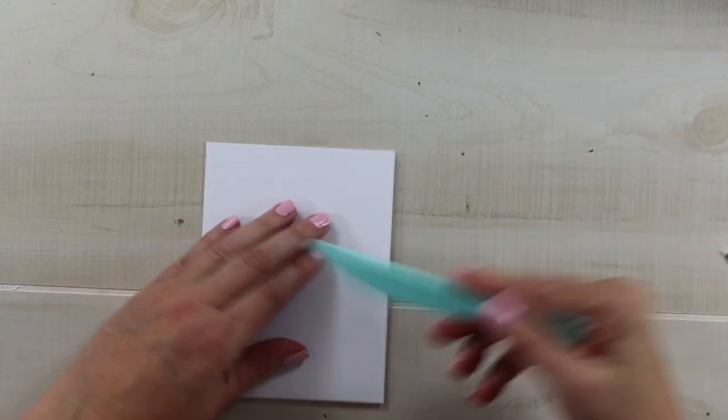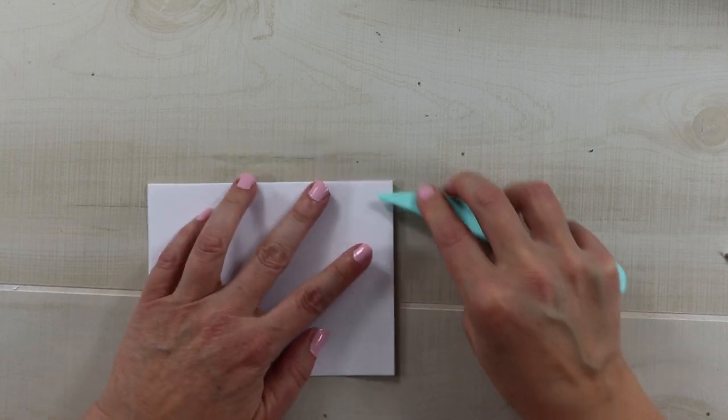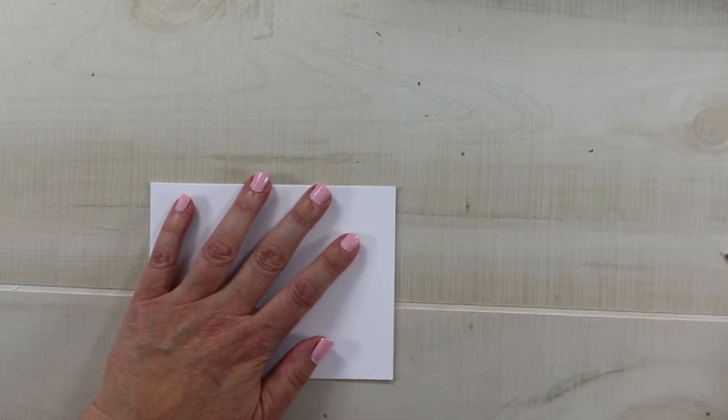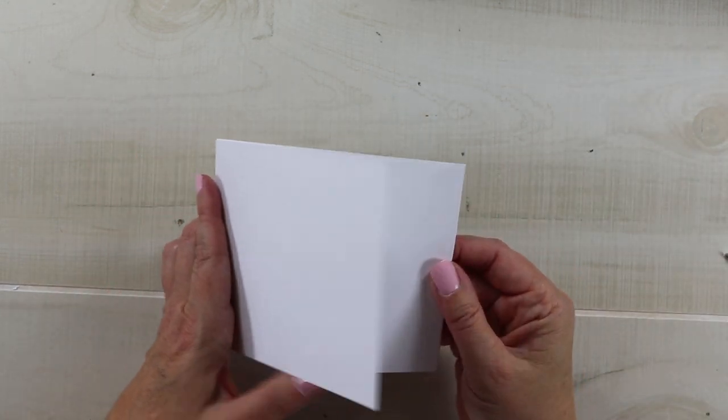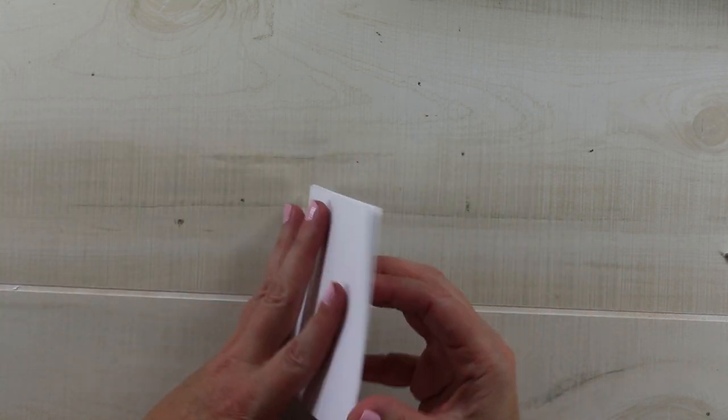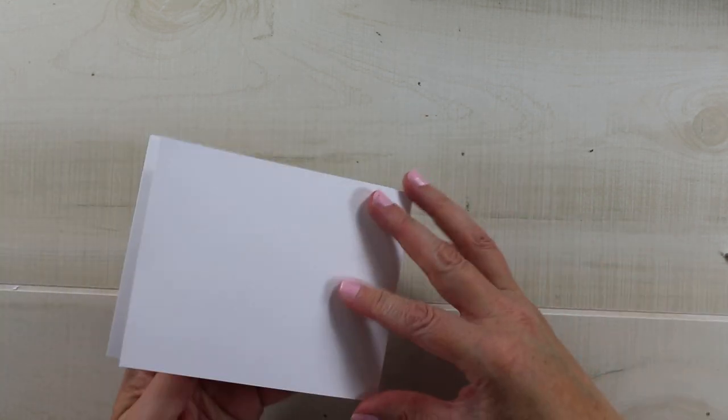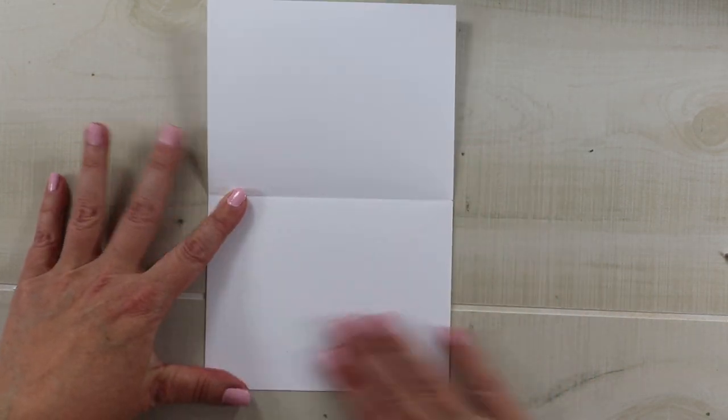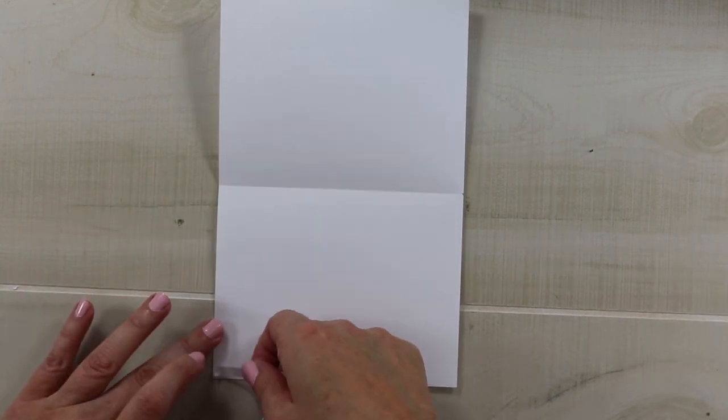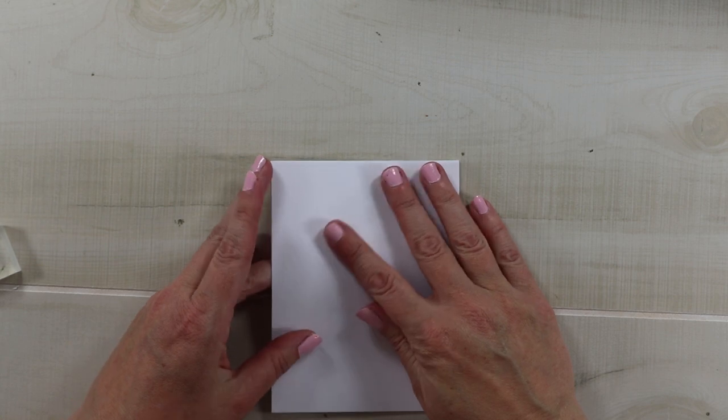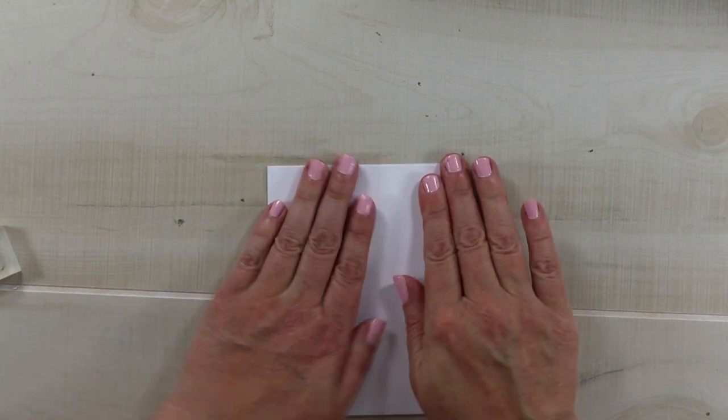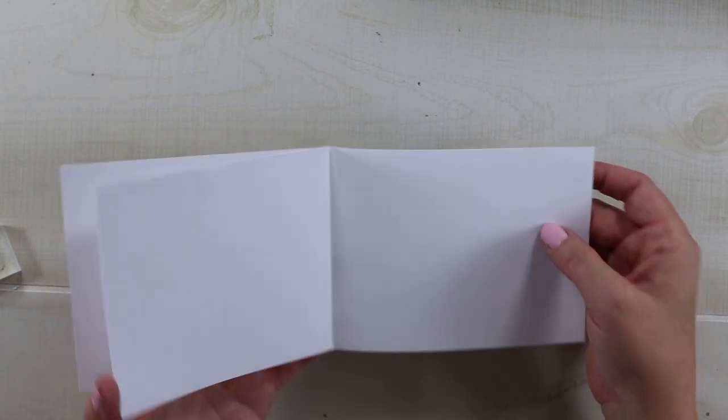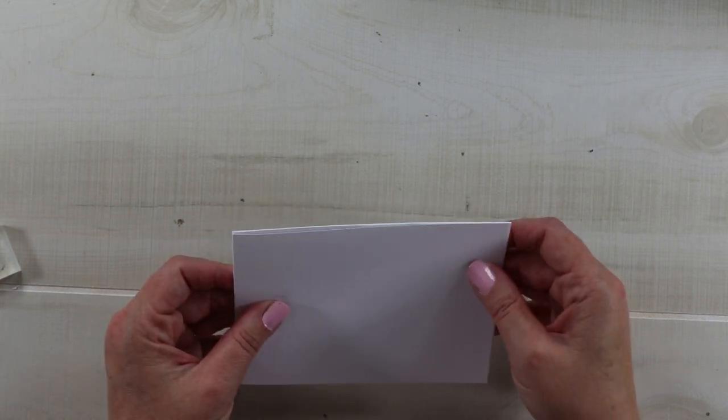Then I'm going to use the bone folder to reinforce that crease because you want it to be nice and flat. So now what you've got is a booklet that will open here and then here as well. I want to add a layer of double-sided adhesive tape here to the middle to keep this portion adhered, and I'll just fold that closed to adhere those portions together. This will be the second style of insert for our accordion album.